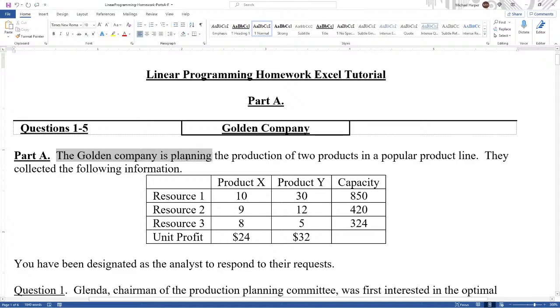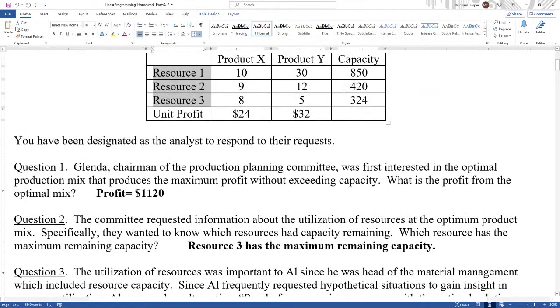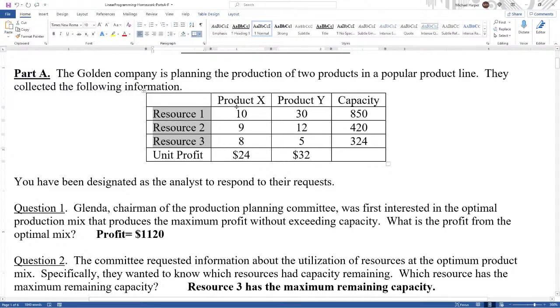The Golden Company is planning the production of two products in a popular product line. They collect the following information: Product X, Product Y, Resources 1, 2, and 3, with their Capacity and Profit. So the structure of the problem is a product mix problem.